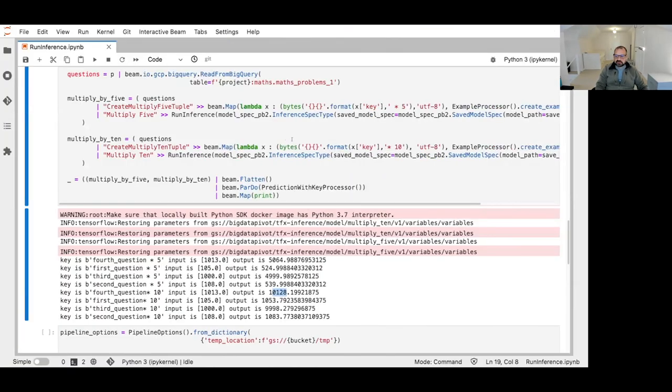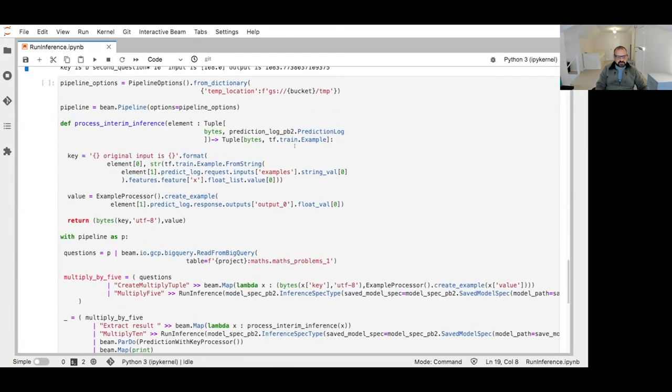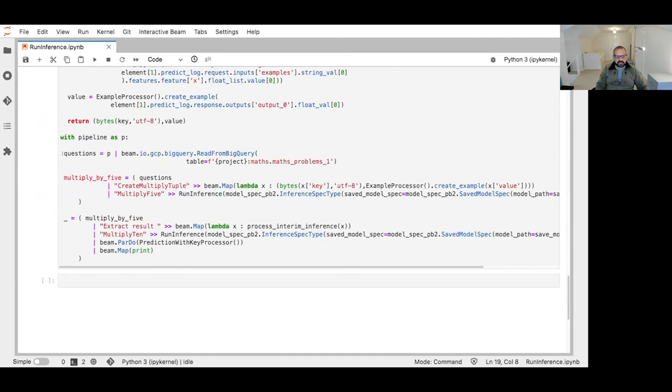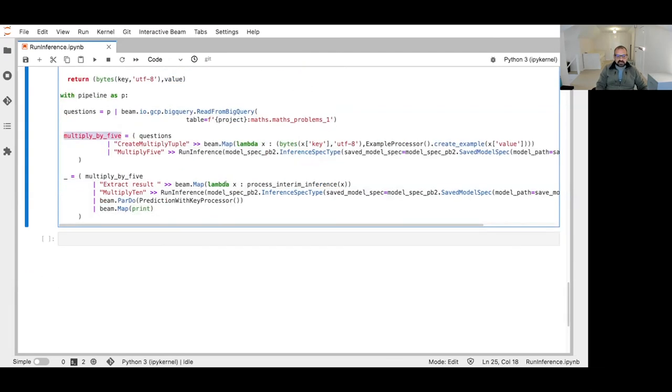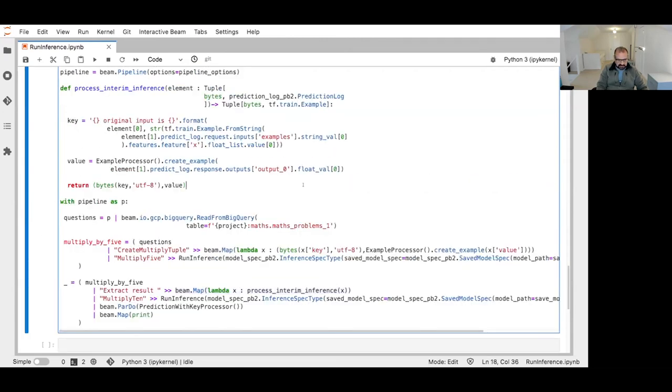Okay, moving back to our demo. So let's go to this one. And the pipeline again, we have our questions P collection, which is the read from BigQuery, we then apply the first model to this, which gives us a P collection multiplied by five. Now, the next step, we take that P collection, and we do a bit of post processing. So here, we have a lambda function, which is essentially taking out the bits from that predict log that we need and getting it into the shape that is required for layer one of the second model. So the multiply by 10 model is then applied to that P collection, and we have our output. So let's run this.